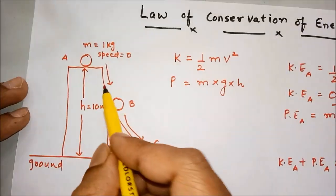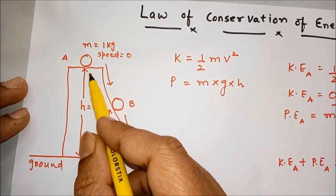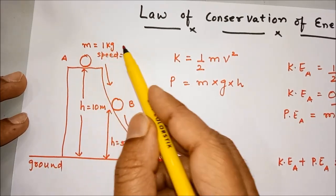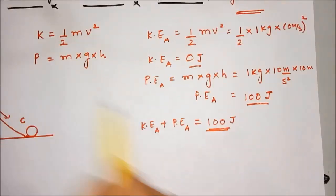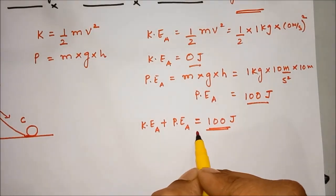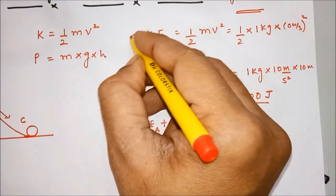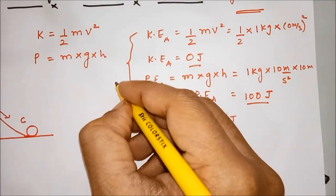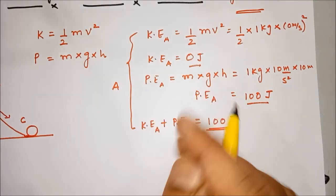So total energy at point A, at a height of 10 meters above the ground, of the body at rest is 100 joule. This is called mechanical energy. These are all the calculations for point A.